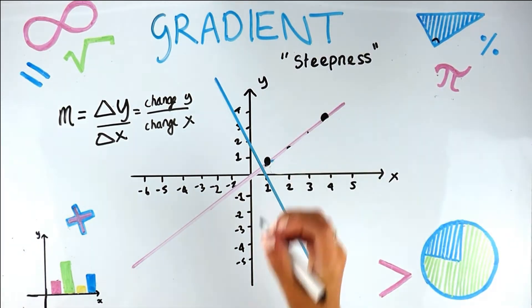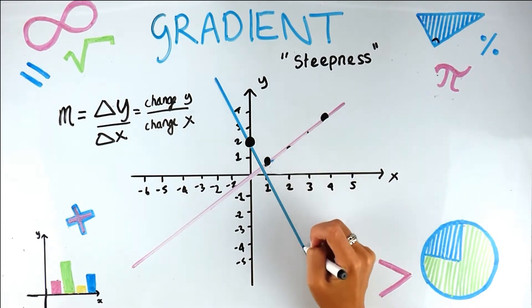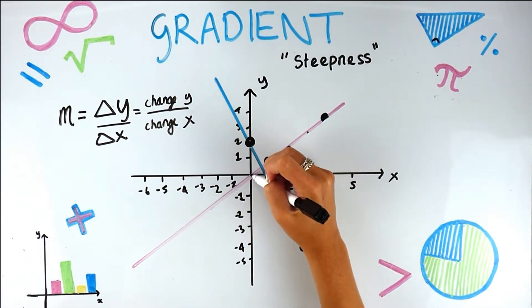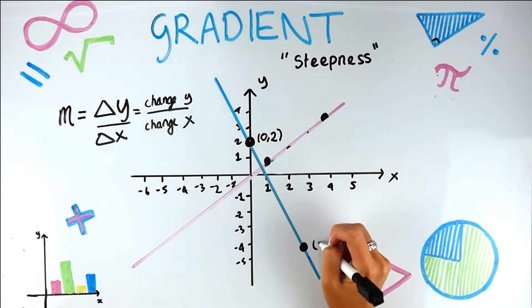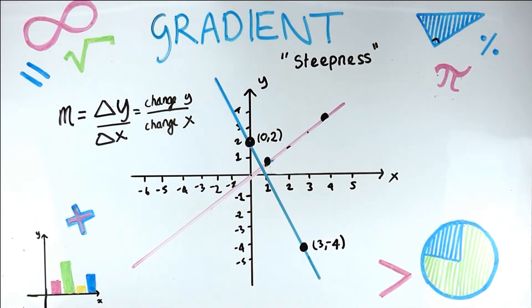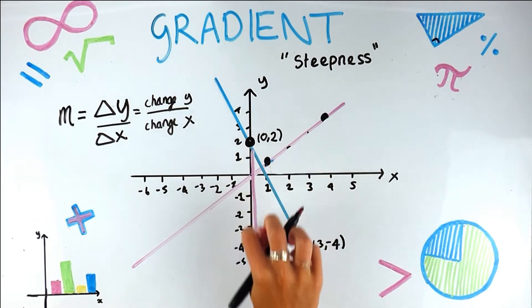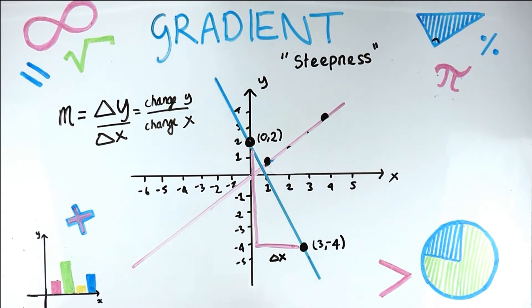Let's take two points on this next line. I've marked them, though I'm not sure how accurate they are. This point is (0, 2) — zero along, two up. And here we've got (3, −4) — three along, minus four. We've taken our two points and we want the gradient, so we're going to use the equation: change in y over change in x. Let's work out the change in x — delta x — going from x value three to zero.